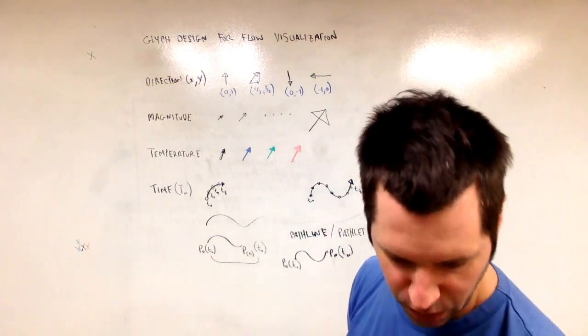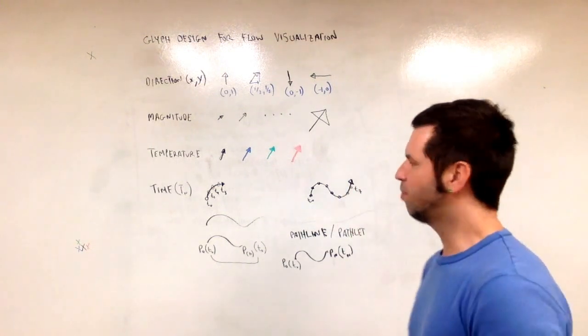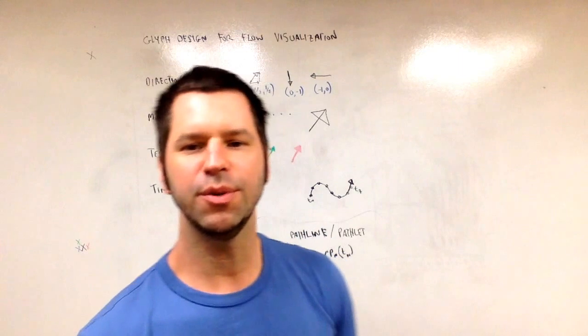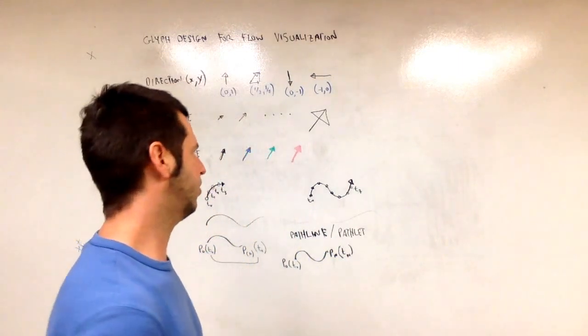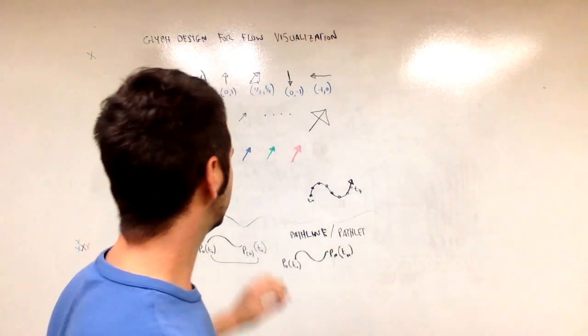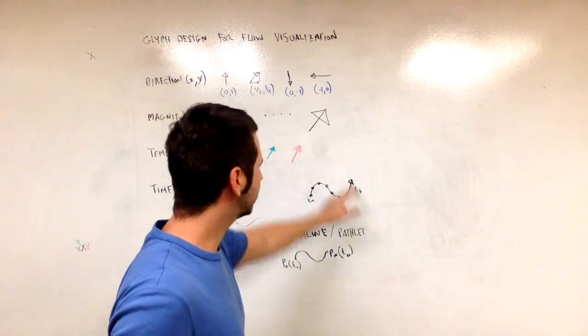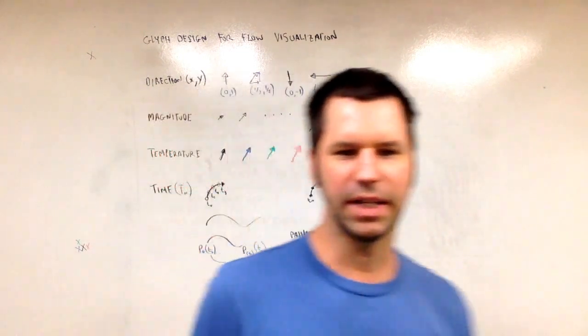And that's one possibility. It's not the only possibility. There are lots of possibilities for glyph design to encode time in the curvature of a glyph.